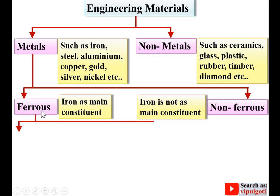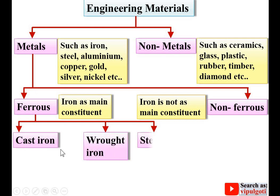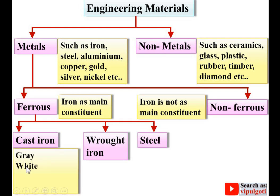Ferrous metals are further classified into three different categories: cast iron, wrought iron, and steel. Cast iron is further classified into different categories such as gray cast iron, white cast iron, malleable cast iron, and nodular — sometimes called ductile cast iron.